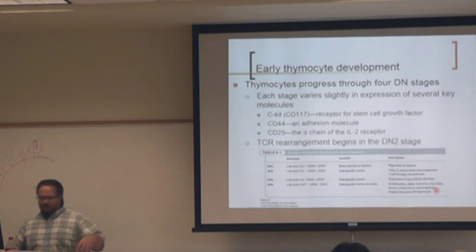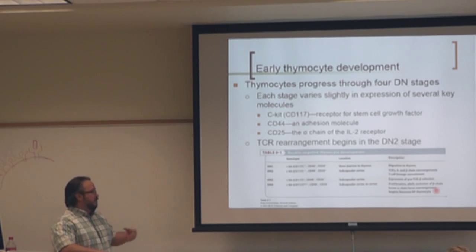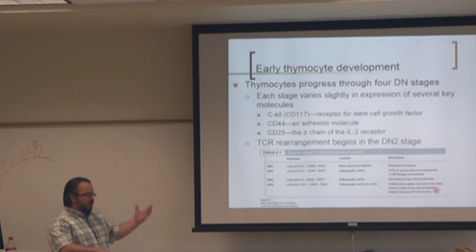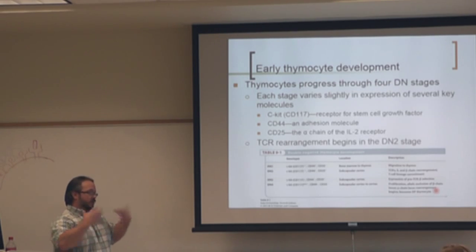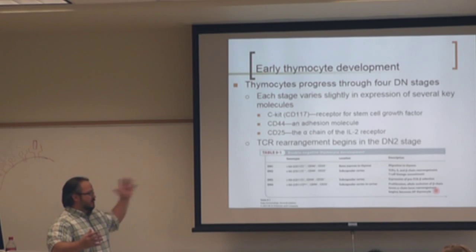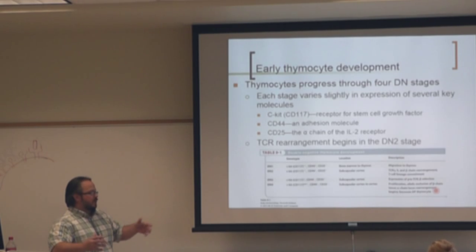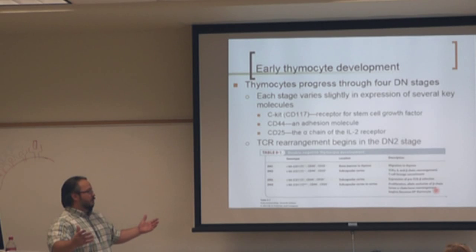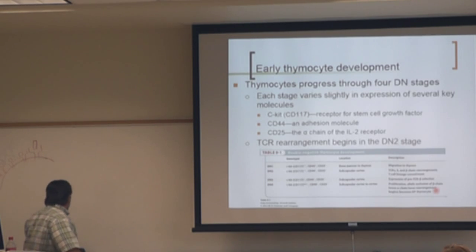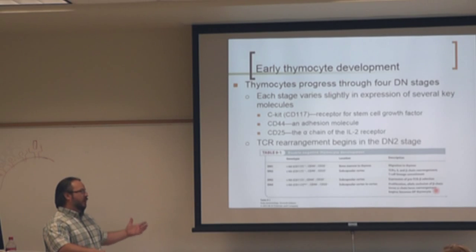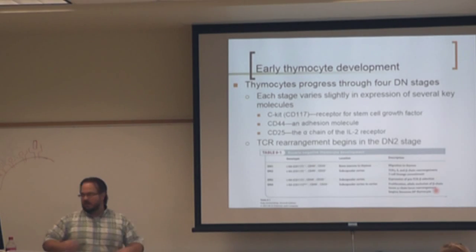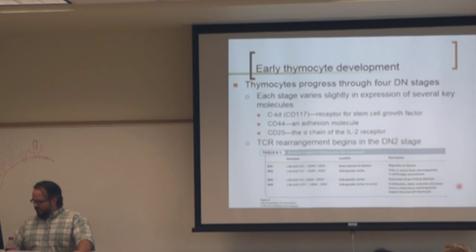These cells start to proliferate before they even recombine the alpha chain, which actually leads to more diversity. If you have a functional beta — one that rearranged in-frame and is stably expressed — you'll get lots of clones that all have that same beta, and then they'll rearrange the alpha. So you'll have many cells with one beta but a lot of different alphas, which leads to more diversity in the T cell receptor repertoire.